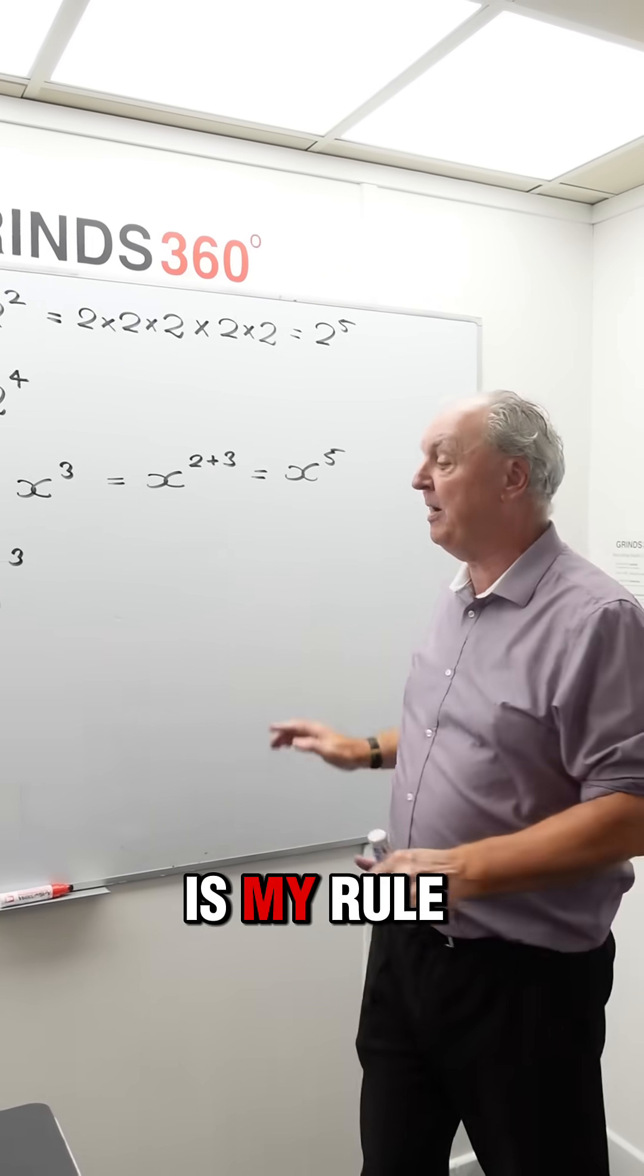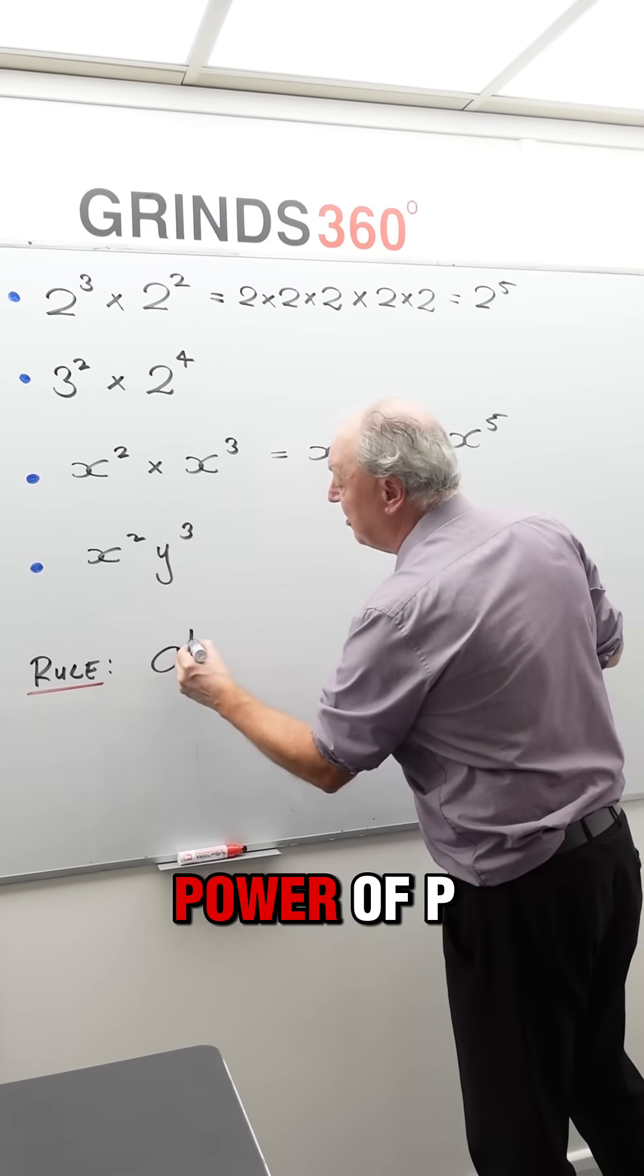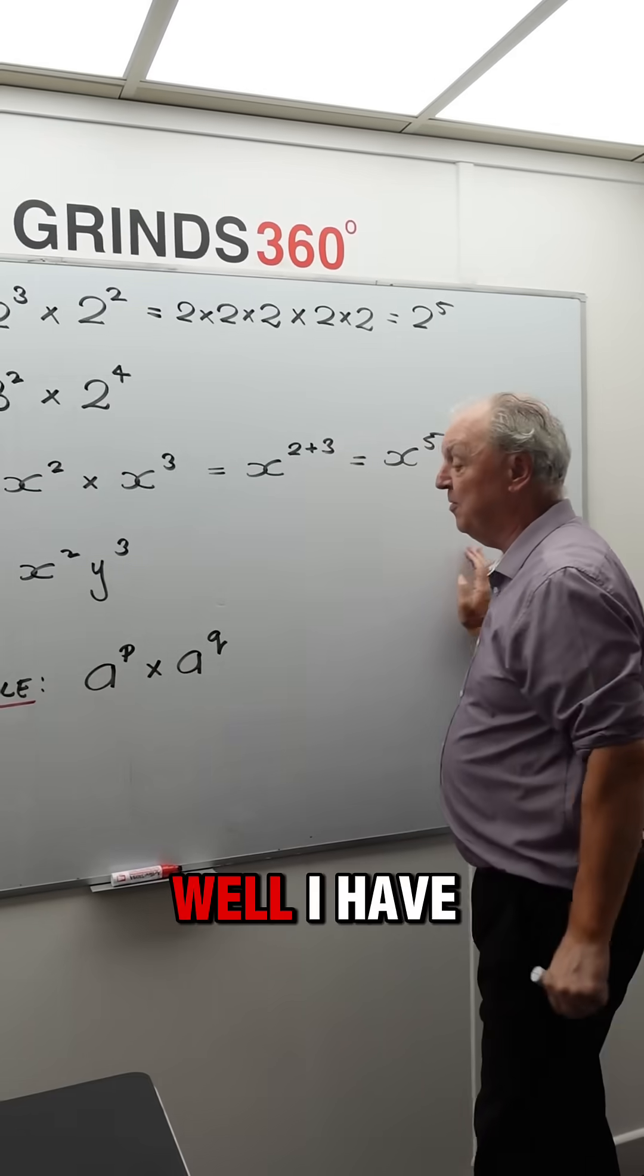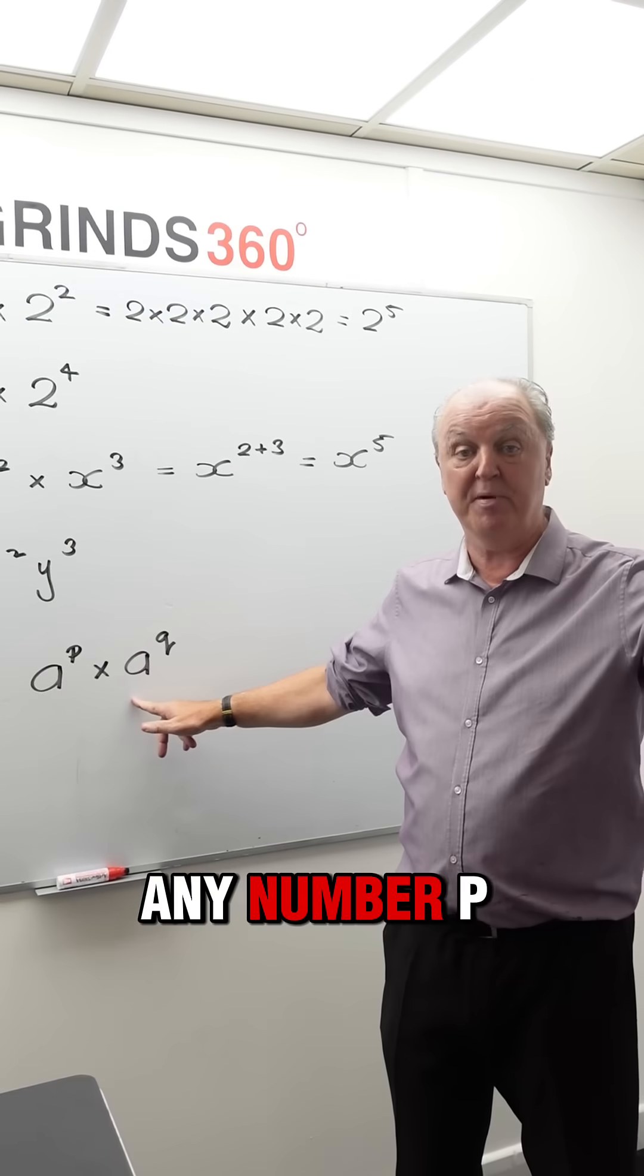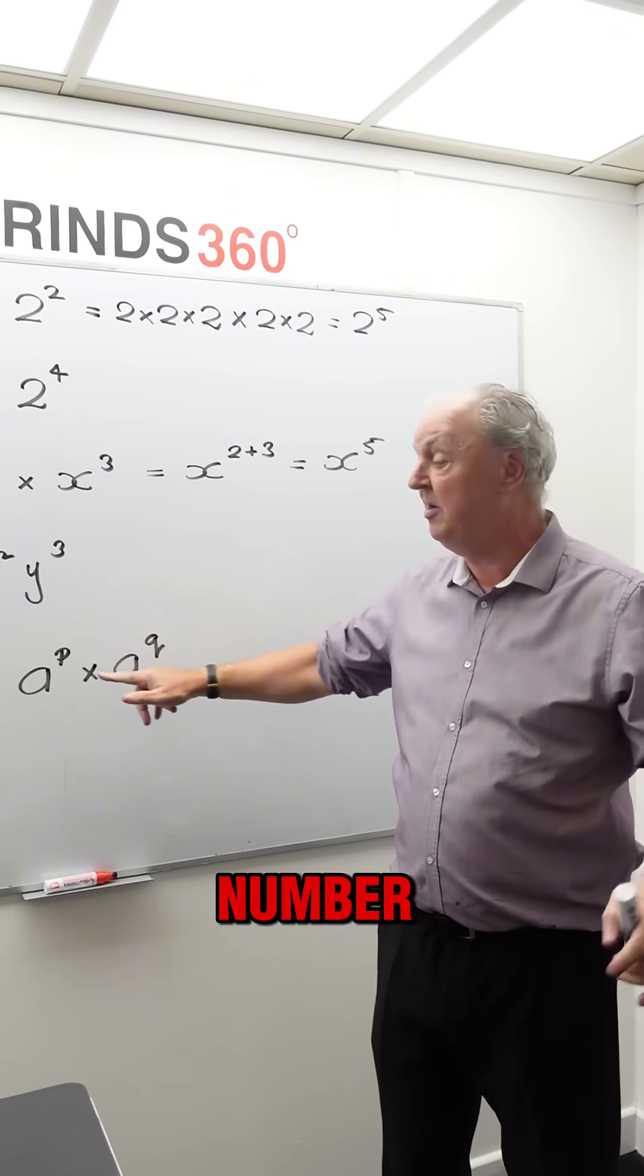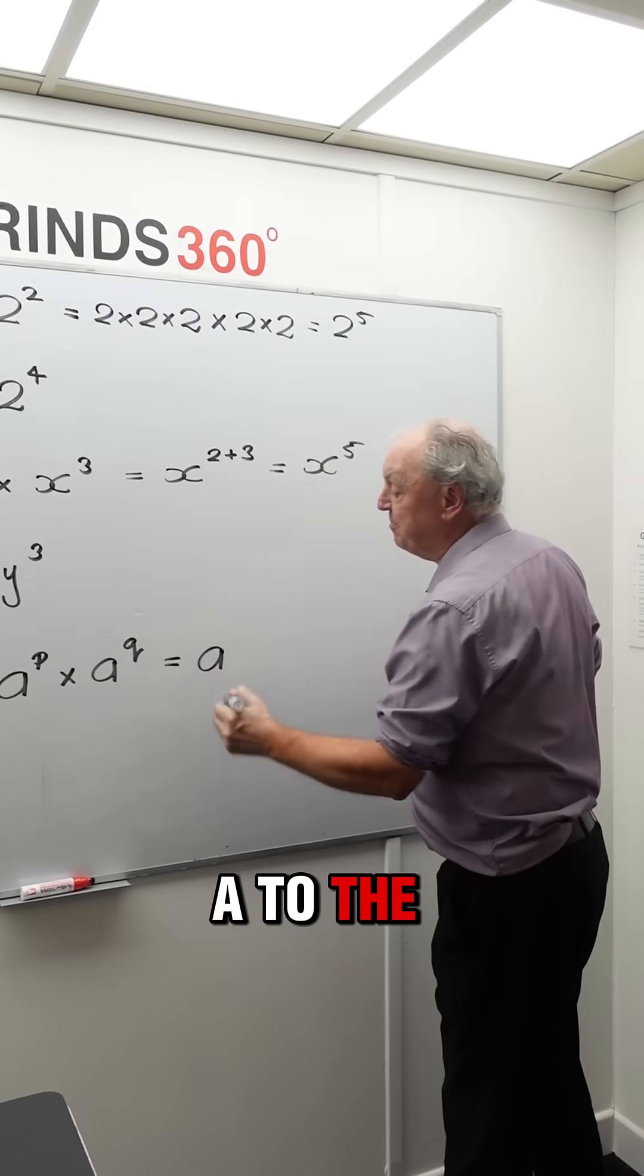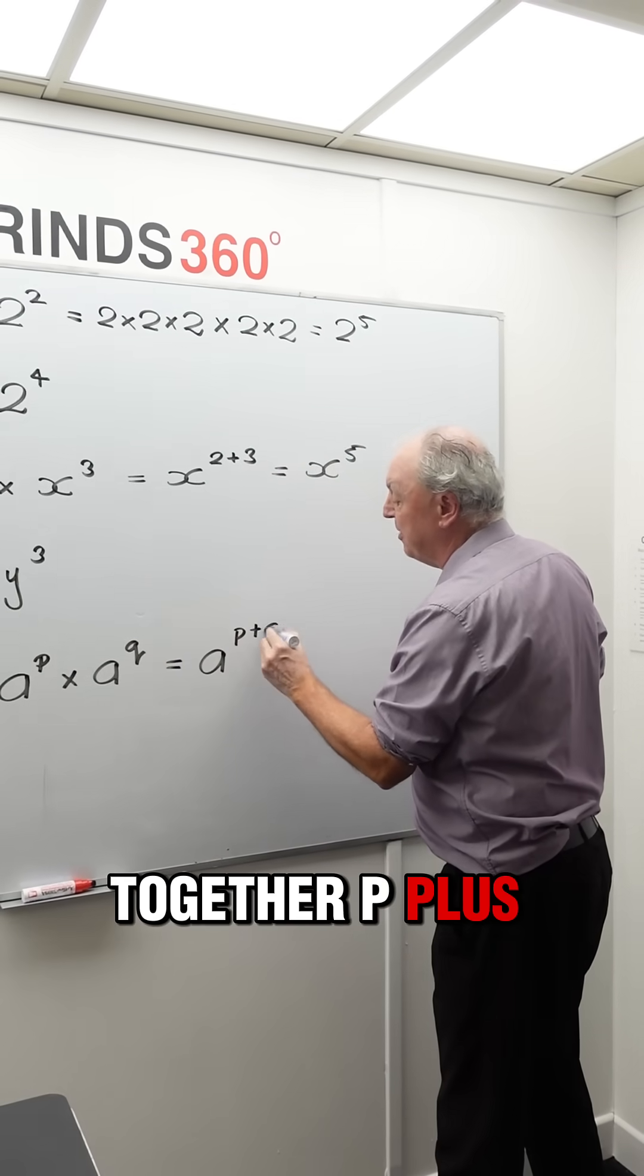In general, this is my rule. You'll see this rule in your textbook. If I've got a to the power of p multiplied by a to the power of q, well I have the same base, don't I, called a? a stands for any number, p stands for any number, q stands for any number. What is my answer? My answer is a to the power of—add the powers together—p plus q.